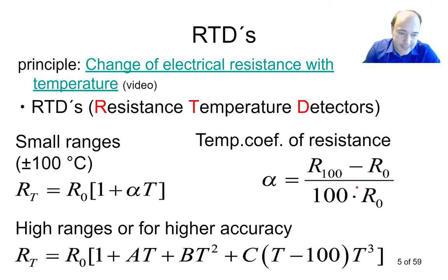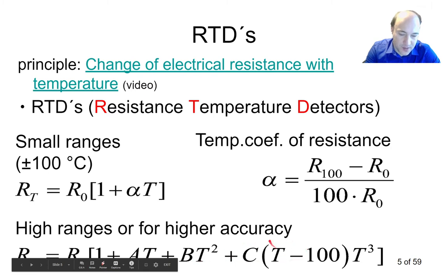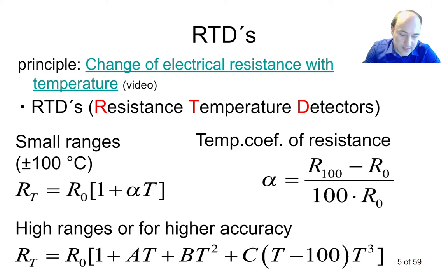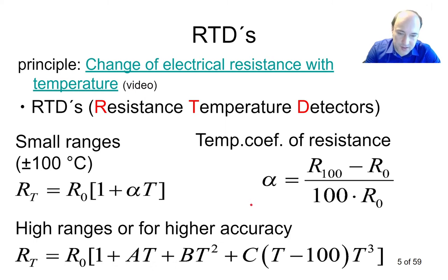For higher accuracy or a larger temperature range, we need a more complex equation with additional coefficients: A, B, and C. This equation is no longer linear — it includes T-squared and higher-order terms. If you want to describe the dependence of electrical resistance on temperature in a larger range, you need this type of equation. This formula is valid only for platinum; for nickel, for example, you would need even more coefficients.